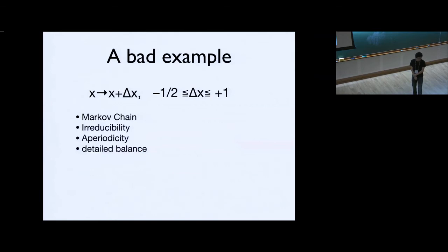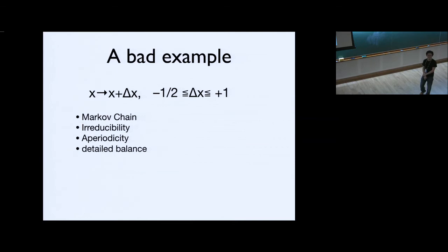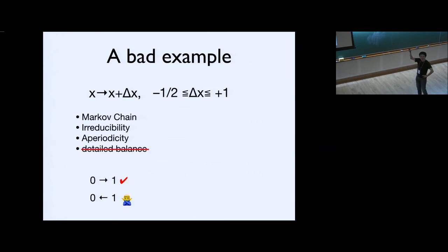It's always instructive to see a bad example that does not work. Imagine we shift x to x plus delta_x, but choose delta_x to be a uniform random number between minus 1.5 and plus 1.5. The problem? The detailed balance is apparently broken because it's not symmetric: we can go from 0 to 1, but we can also go from 1 to 0 — going back to how we checked detailed balance, we can easily see the condition is not satisfied.